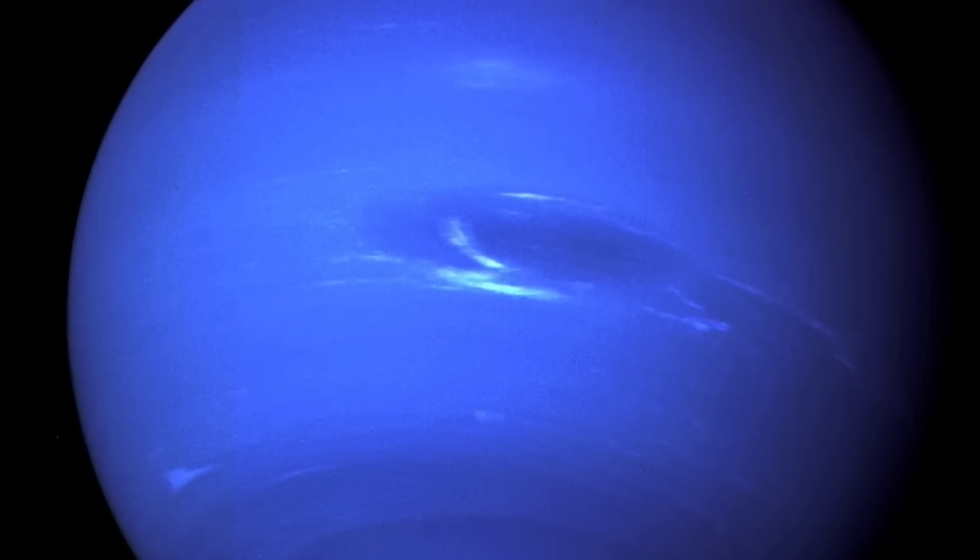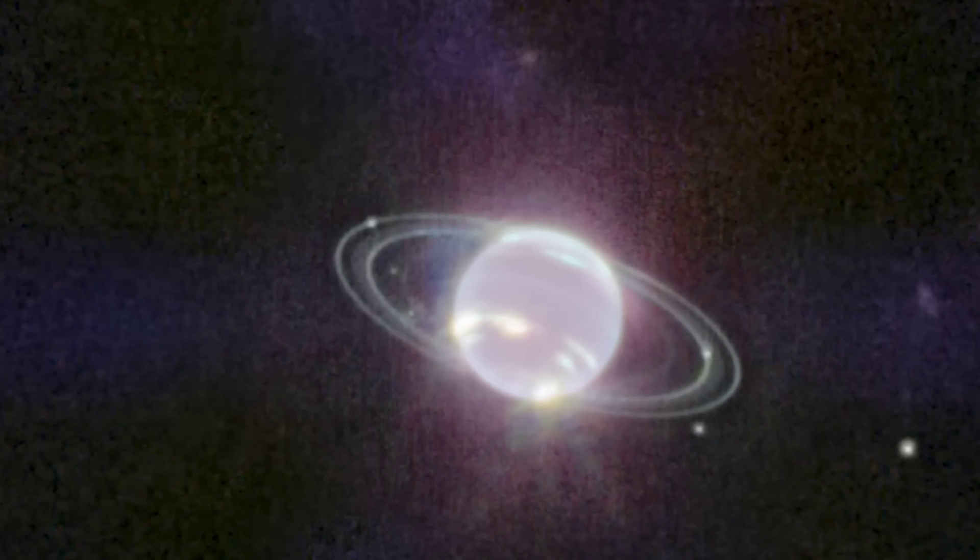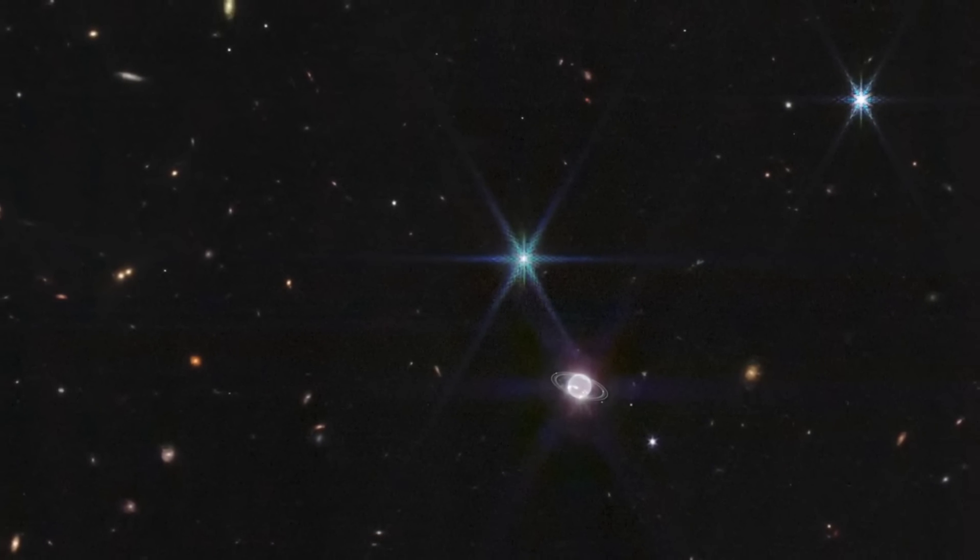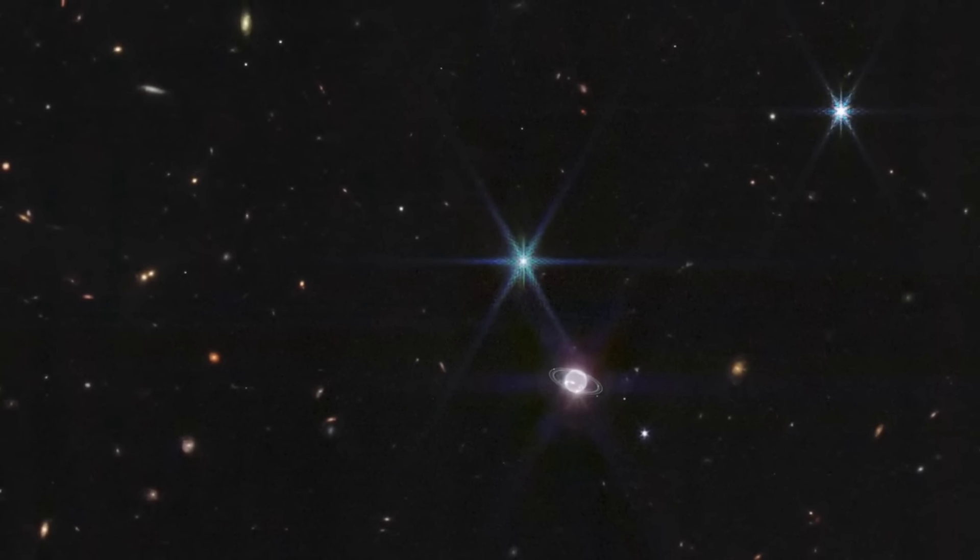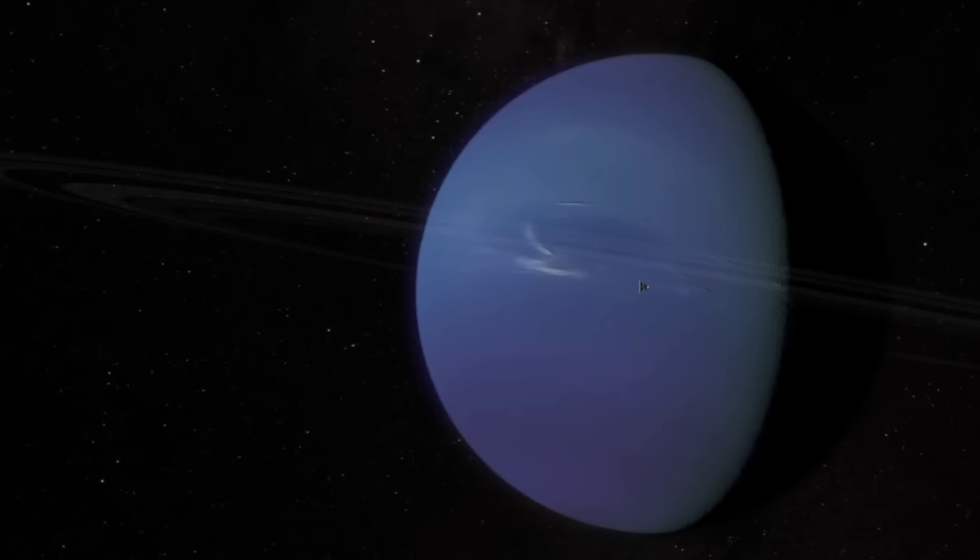Neptune has fascinated researchers since its discovery in 1846. Located 30 times farther from the Sun than Earth, Neptune orbits in the remote dark region of the outer solar system. At that extreme distance, the Sun is so small and faint that high noon on Neptune is similar to a dim twilight on Earth.